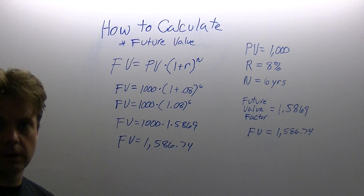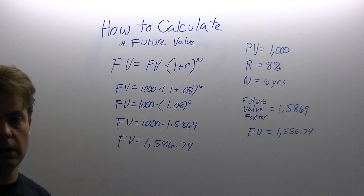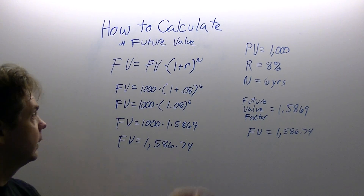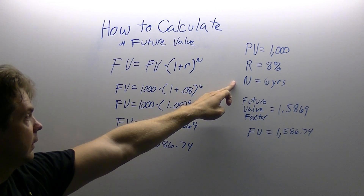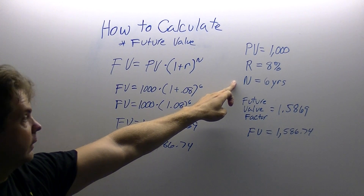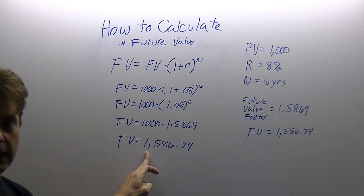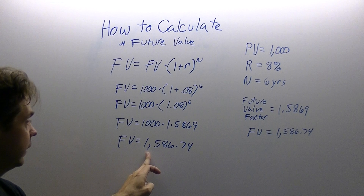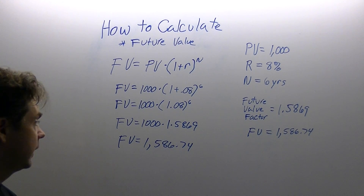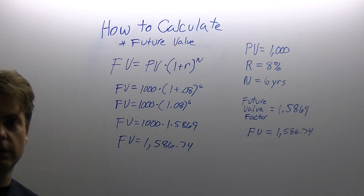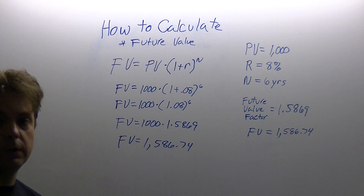So what this means to us is: if we invest $1,000 today at an interest rate of 8% compounded annually for 6 years, we are going to have at the end of 6 years $1,586.74. Please click the link and I'll see you in the next video.